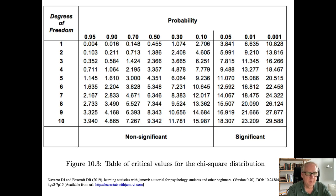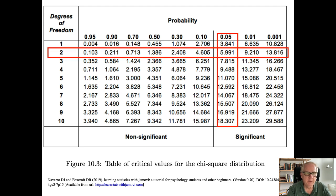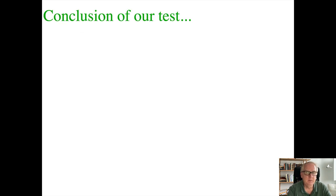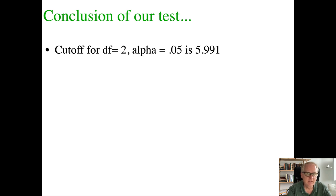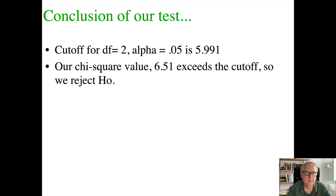Chi-square tables are small — this one only goes up to 10 degrees of freedom, since it only concerns the number of categories. With df = 2 and alpha = 0.05, the intersection in the table gives a cutoff of 5.991. If our obtained chi-square exceeds that, we can reject the null hypothesis. Our chi-square of 6.51 exceeds the cutoff of 5.991, so we reject H₀.